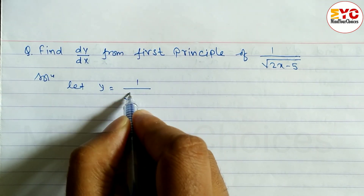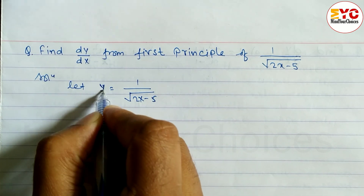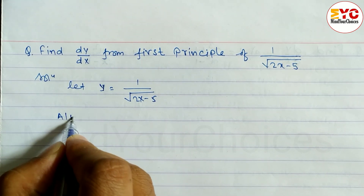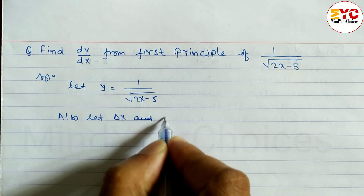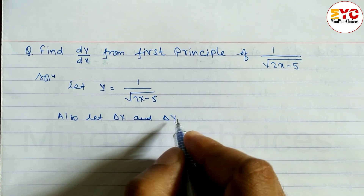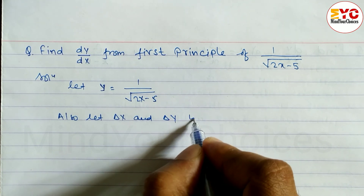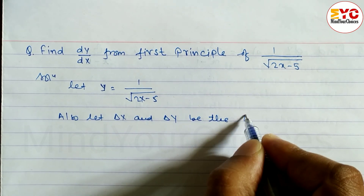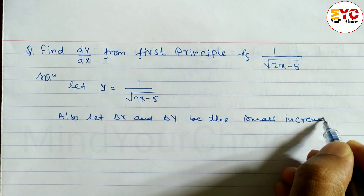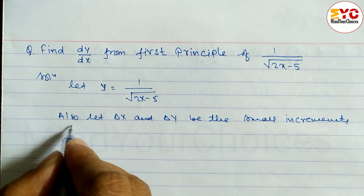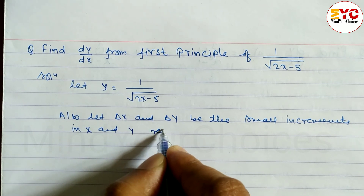So also, let del x and del y be small increments. This is the rule to find dy/dx using the first principle. Let del x and del y be the small increments in x and y respectively.